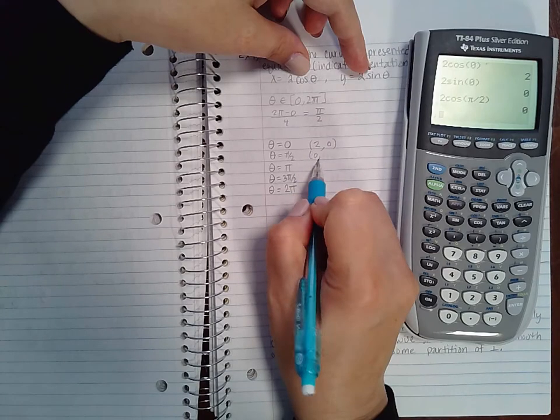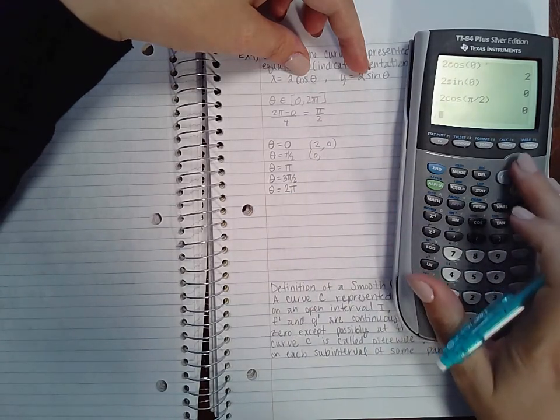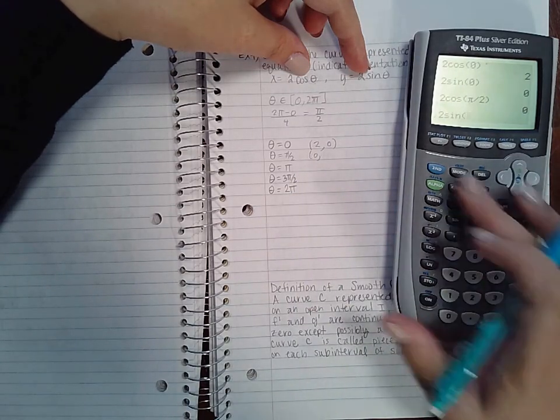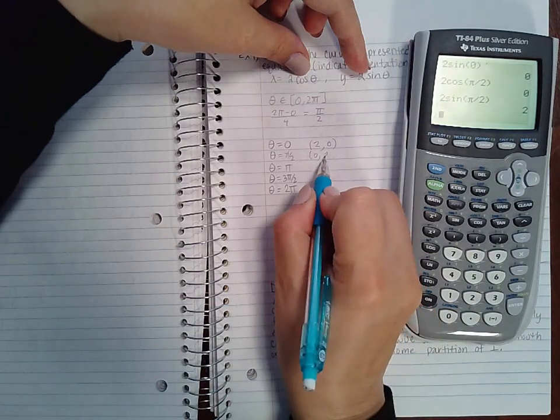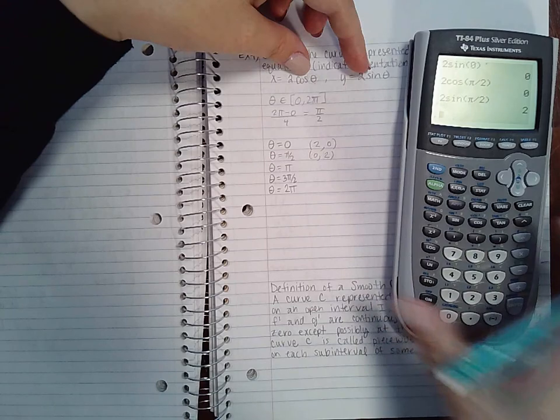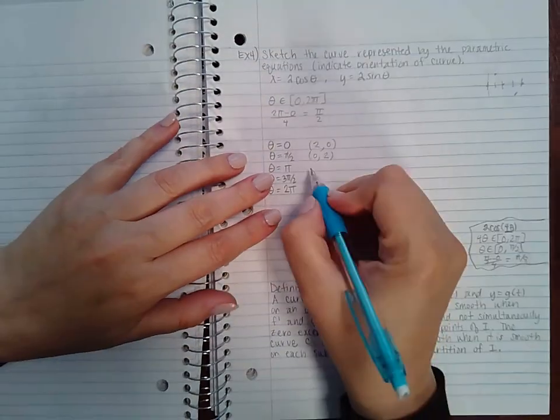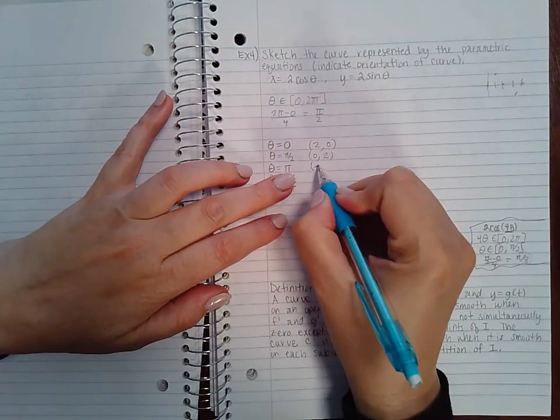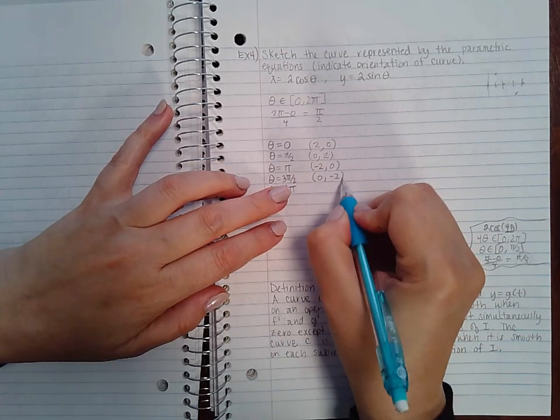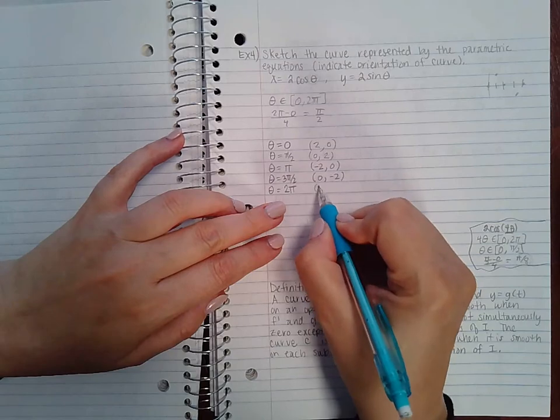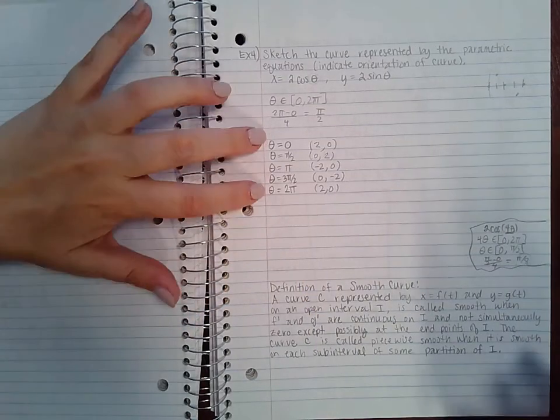You get zero. And then sine, 2sine(π/2), you get two. So on and so forth. So you can keep continuing in that path. But I know for π I'm going to get negative two and zero. For 3π/2 I'm going to get zero and negative two.